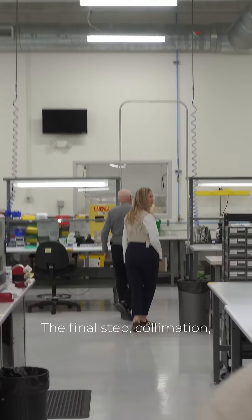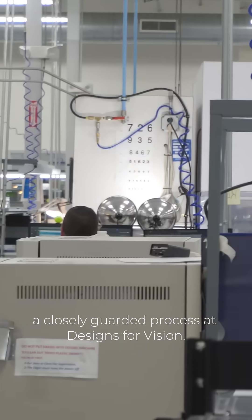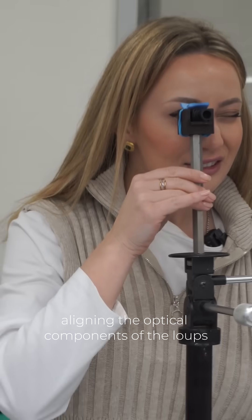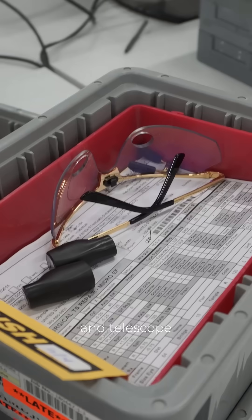The final step, collimation, is a closely guarded process that designs for vision. It involves aligning the optical components of the loupes and telescope to ensure light flows in the correct path.